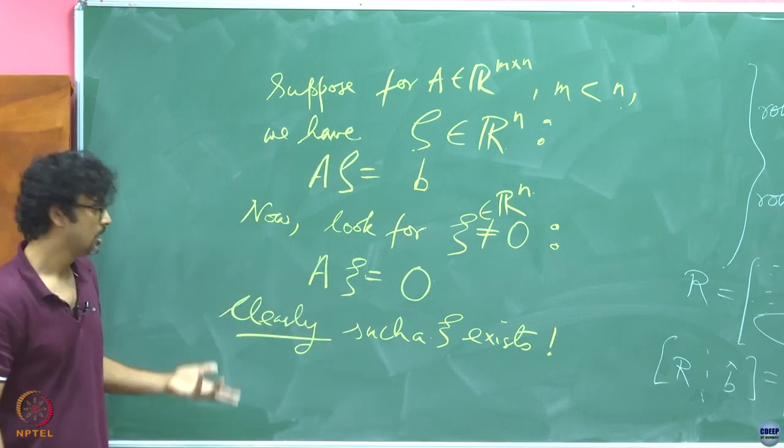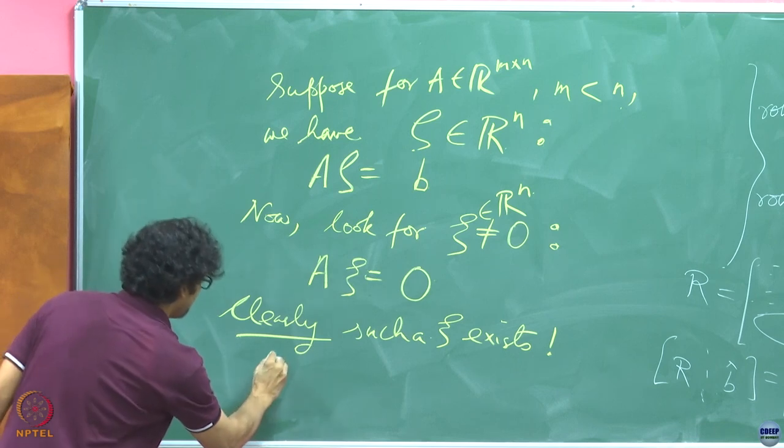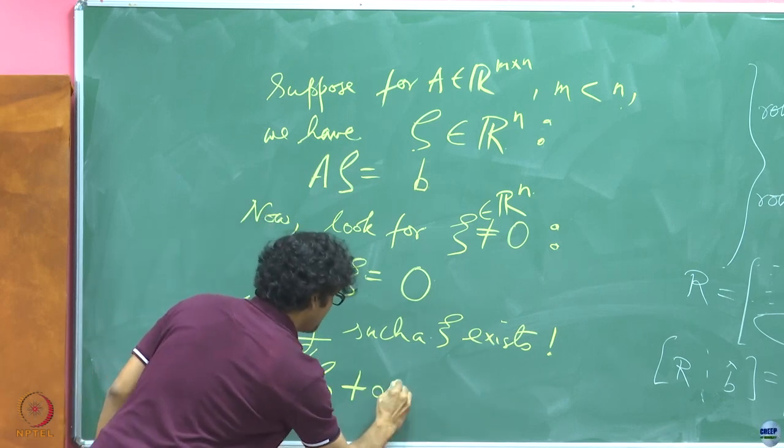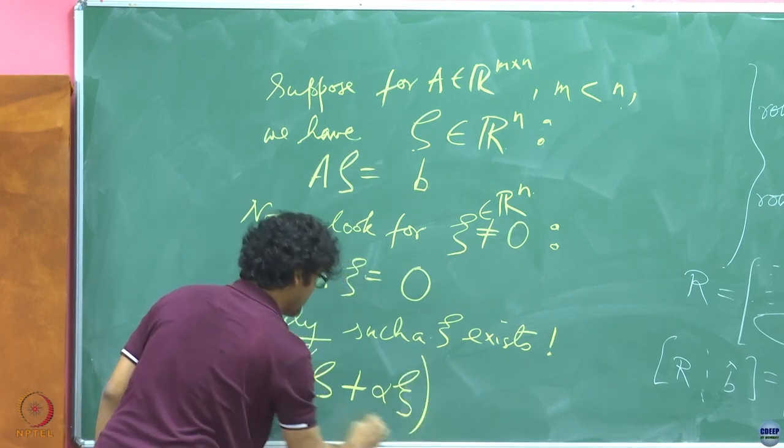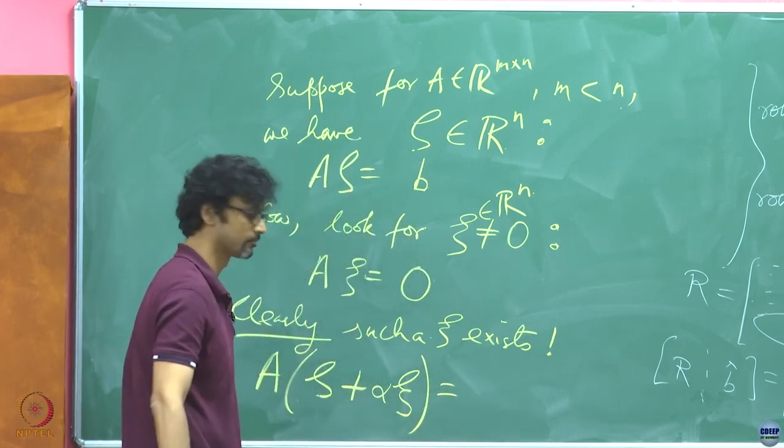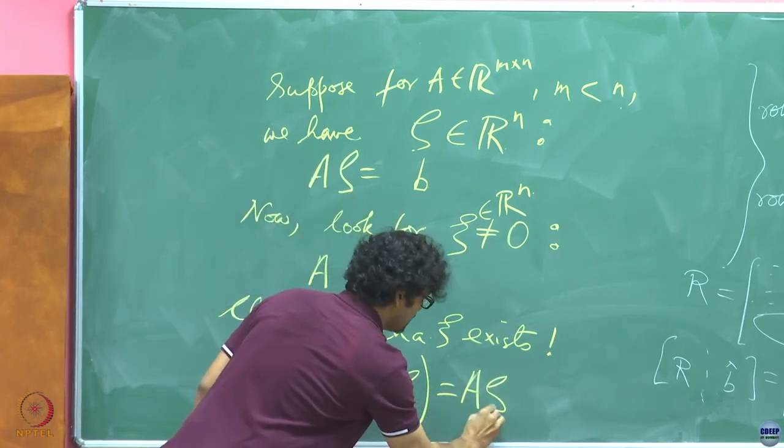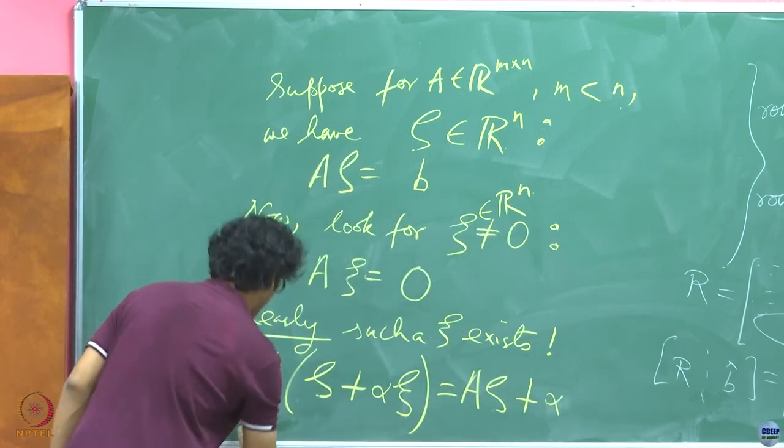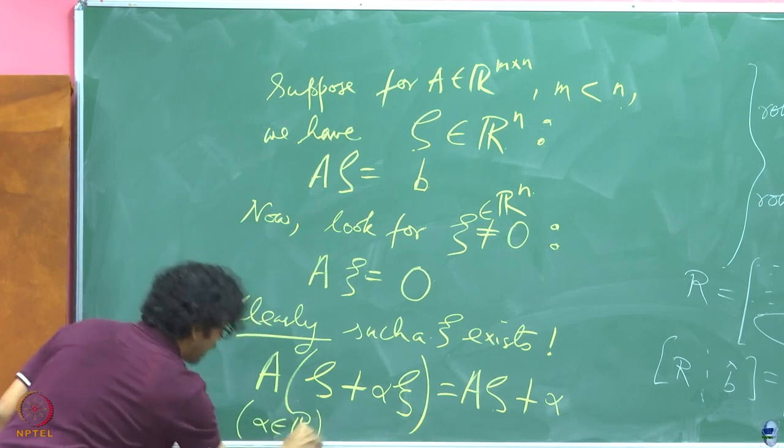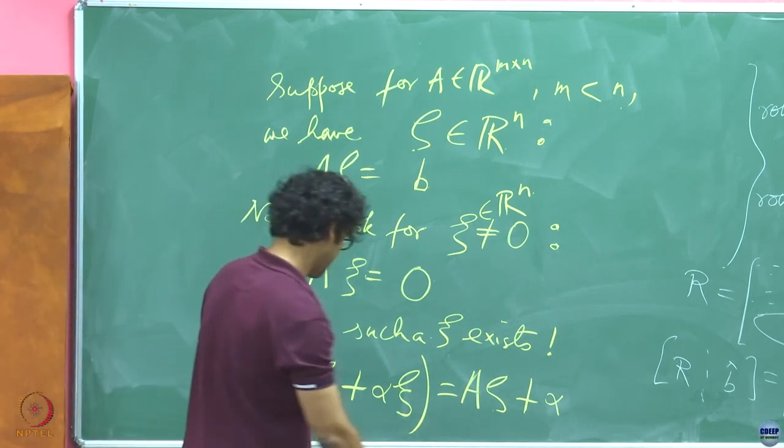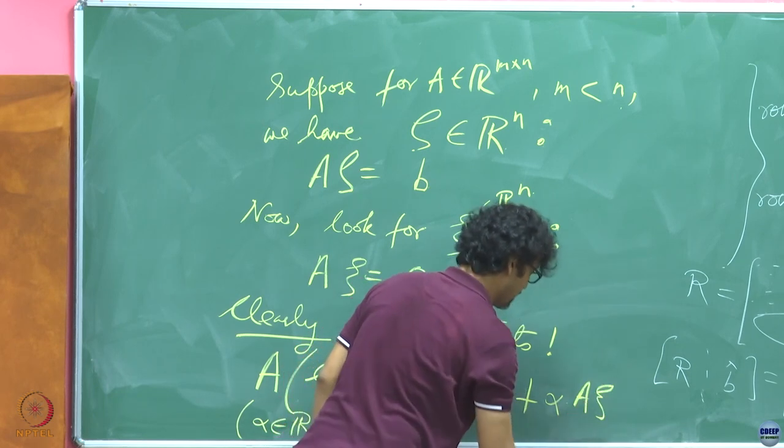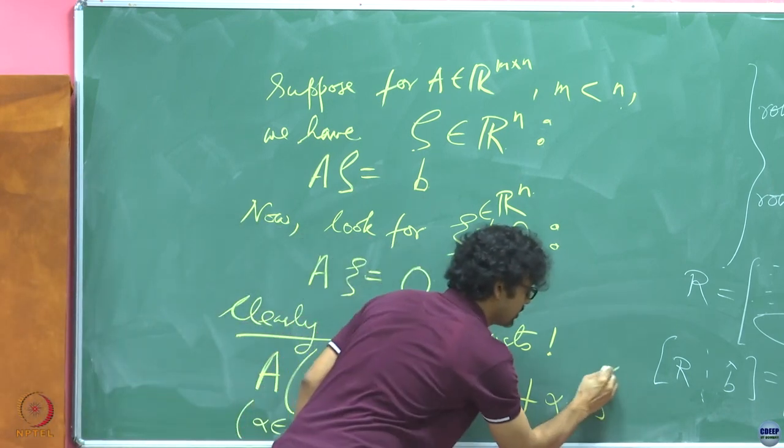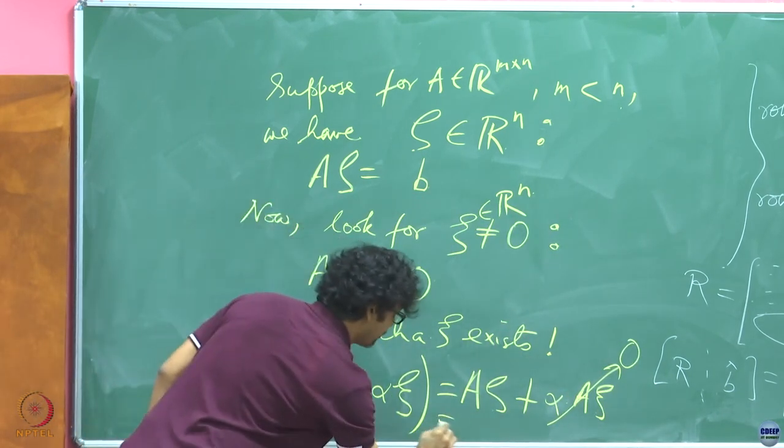So you will have free variables and therefore, you will have non-zero vectors xi of course in R^n such that A xi equals 0. Now, what happens if you take A of zeta plus alpha times xi? This is equal to b because this part is just 0.